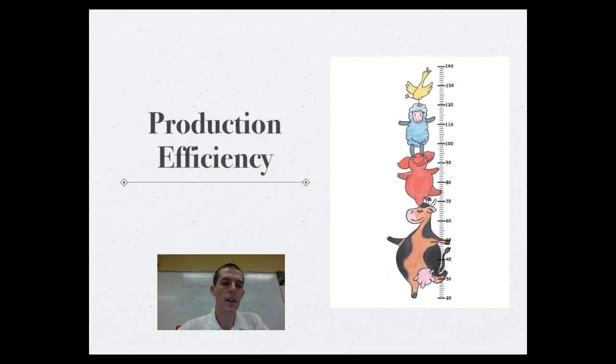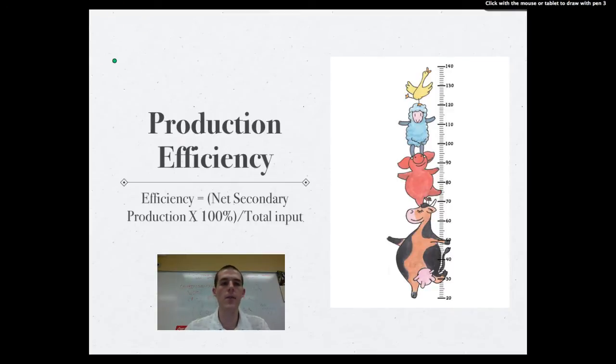With this idea of secondary production, we need to talk about production efficiency, which is essentially the efficiency with which our animals are able to actually take in food and convert it into body mass. The efficiency of our process is equal to the net secondary production, which is the amount of total energy taken in that is actually converted to body mass, times 100% just so we get a nice clean percent efficiency. And this is all divided by the total input.